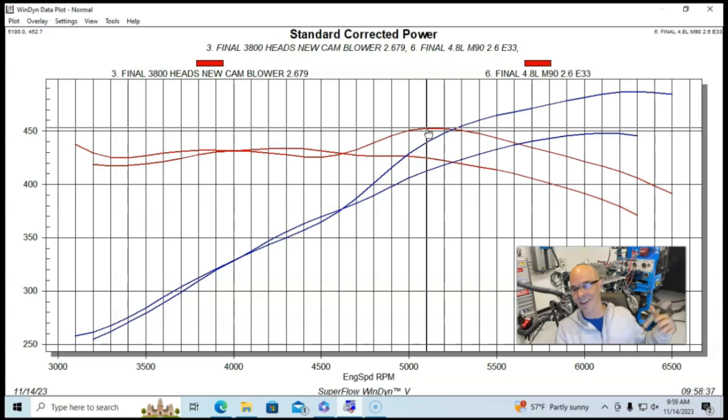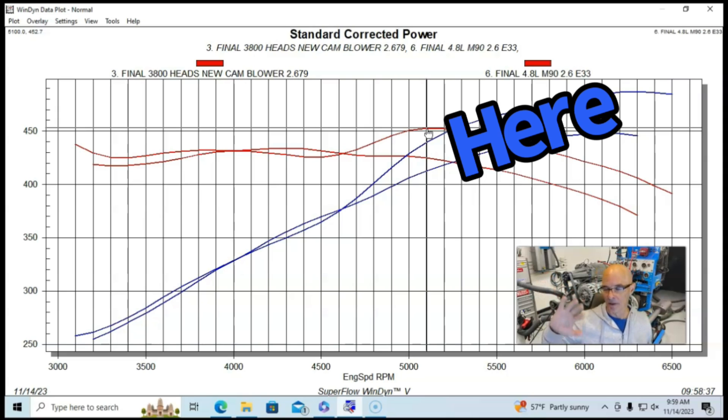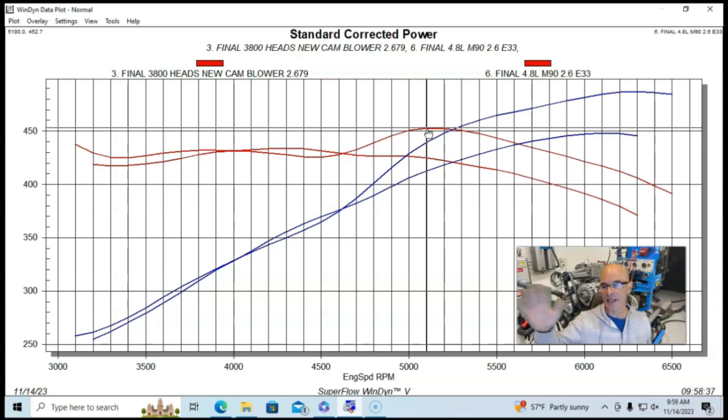Below 4500 they were actually fairly even in the amount of torque output that they produce. But once we got past the 4500 RPM mark, the 4.8 liter actually started making more power.